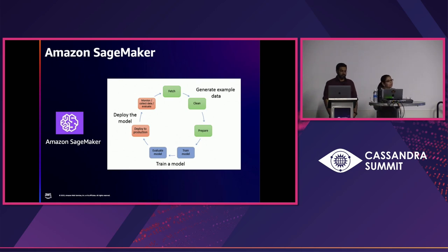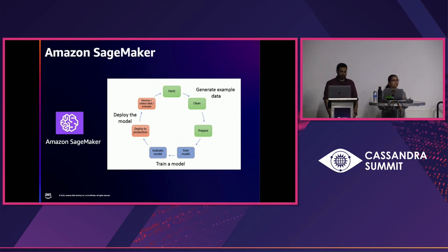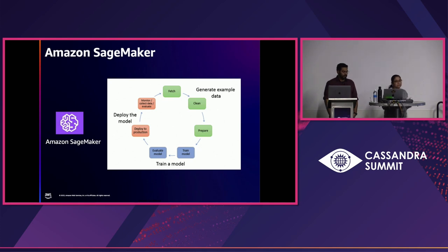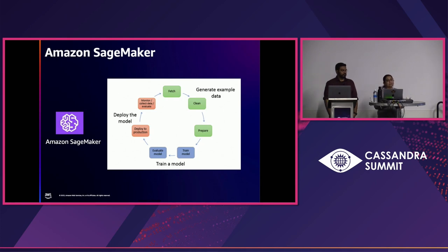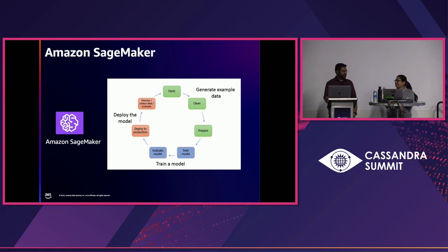One great thing recently added to the SageMaker toolkit is model monitoring. While it's great to set up the model and train things to get the right prediction, over time that can change — certain attributes change, you're not getting that data, some biases come into the dataset. Being able to figure out how well your prediction is doing and adapt to it is very critical for the long term. Having that monitoring is really key to making sure things work well over time. With that, let's get some action — Himanshu, all yours.